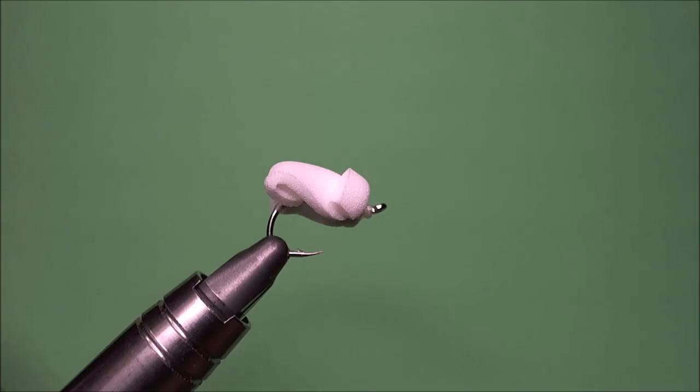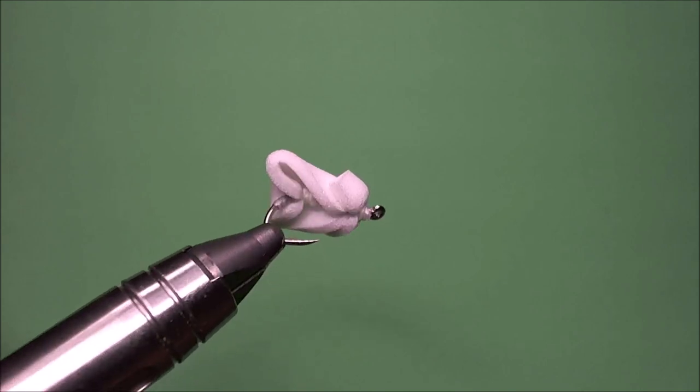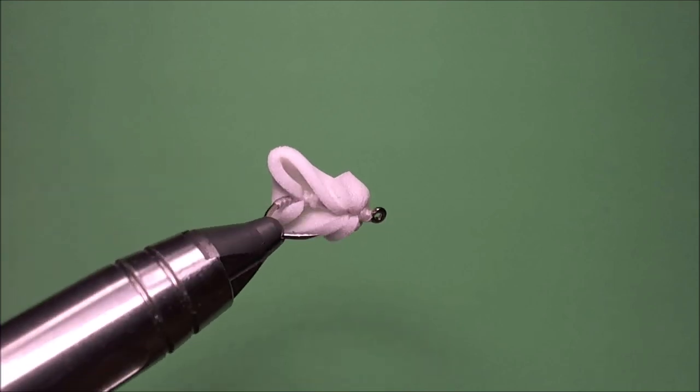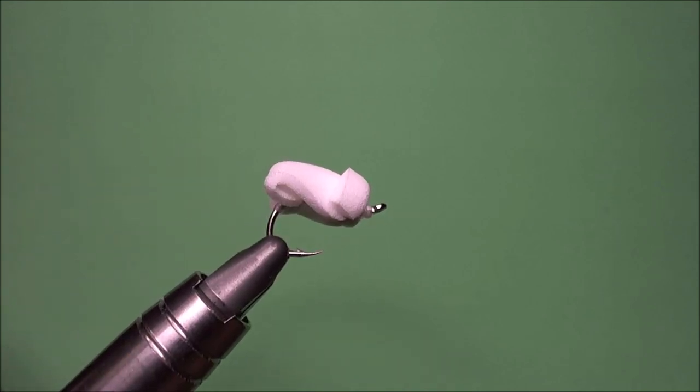So this is the Deadly Breadly. It's somewhere between a breadfly and a gurgler. It's a bit of foam tied in a kind of heart-shaped pattern on any hook you like. It suits anything. Size of the fish is up to you.